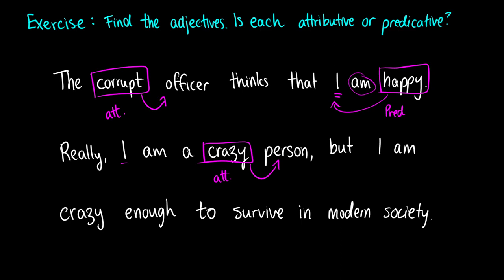Next. But I am crazy enough to survive in modern society. Okay, so in this case, this crazy is linking to the word I. So we have to draw this arrow over a couple sentences or over a couple lines. But this is an example of a predicative adjective. And in this case, we don't have a noun after it. So it's not like I am a crazy person enough. It's just I am crazy. So it's describing I instead of some other noun appearing after it.